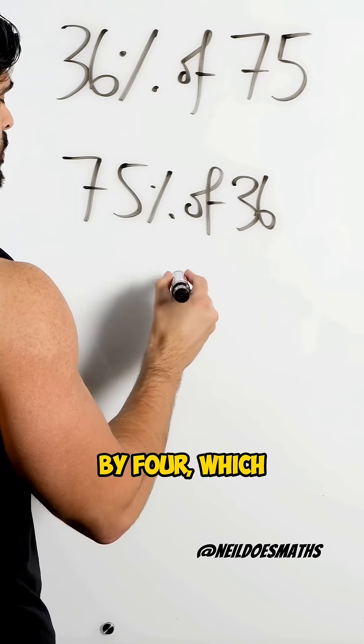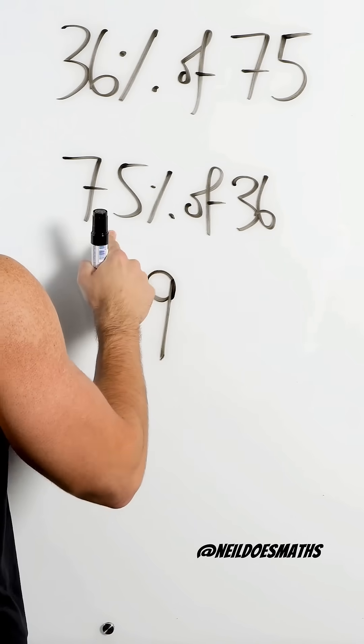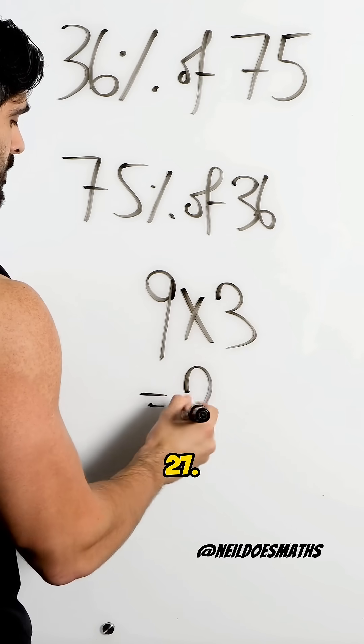So we're going to divide this number by 4, which is 9, and then we're going to multiply it by 3. 27.